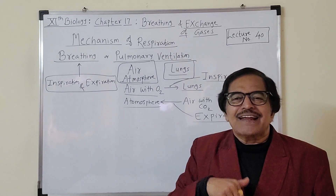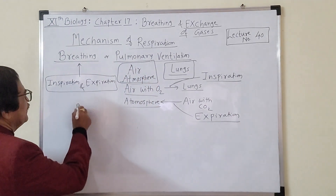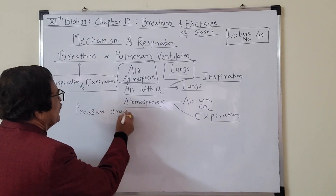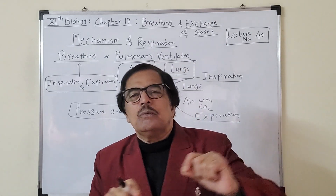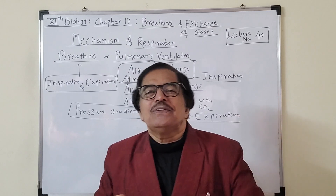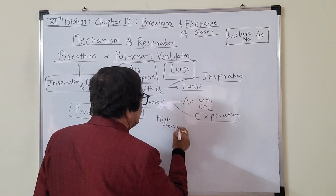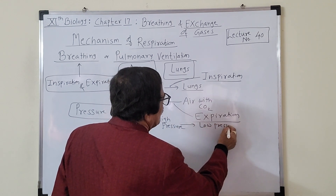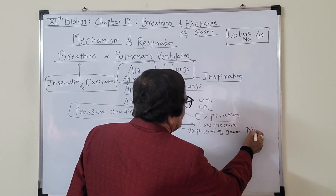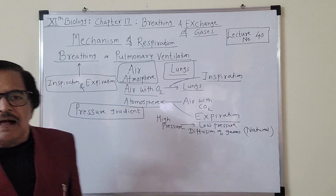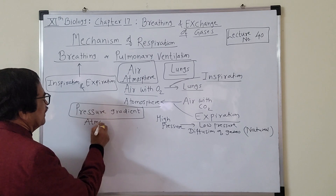The movement of air inside and outside the body is controlled by and works on the pressure gradient. The principle is that gases diffuse from a region of high pressure to a region of low pressure — this is called diffusion of gases, and it is a natural, autonomous process.